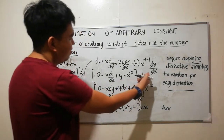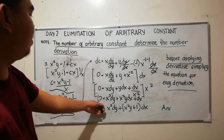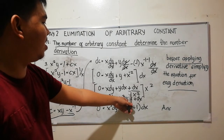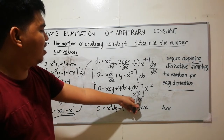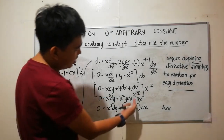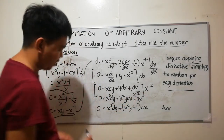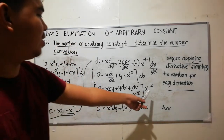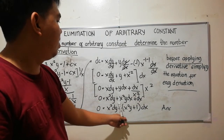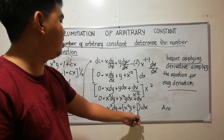We multiply the whole equation by dx, giving 0 equals x dy plus y dx plus dx over x squared. Since x squared is in the denominator, we then multiply the whole equation by x squared. The resulting equation is 0 equals x cubed dy plus x squared y dx plus dx.